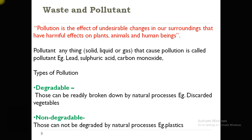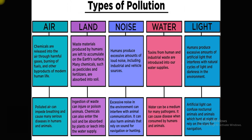Pollution is the effect of undesirable changes in the surrounding environment that have harmful effects on plants, animals, human beings, or any biotic factors. A pollutant is anything — solid, liquid, or gaseous — that can cause pollution, such as lead, sulfuric acid, or carbon dioxide. Pollution can be classified into two types: degradable — those that can be readily broken down by natural processes, like discarded vegetables or biodegradable waste — and non-degradable — those that cannot be degraded by natural processes, like plastics.